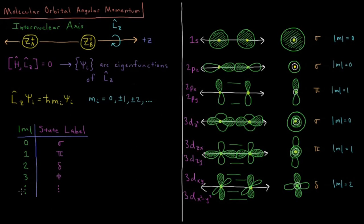So you might guess that for absolute value of m equals 4 being a g function that this would probably be labeled as a gamma orbital. So let's see this in action. For example,